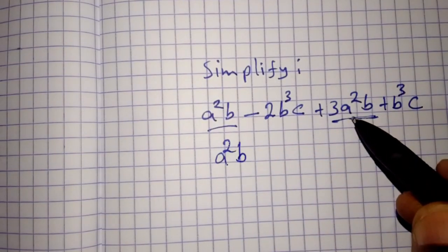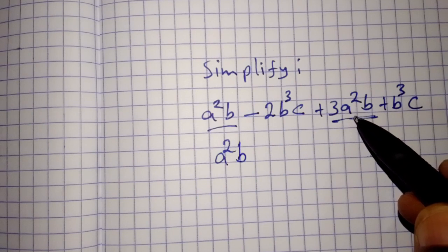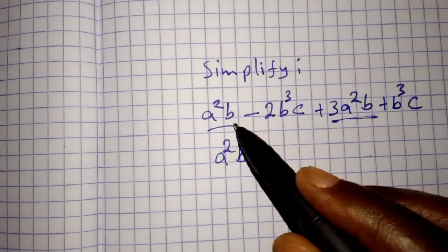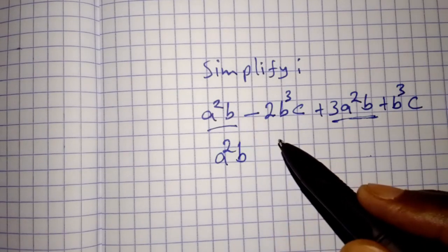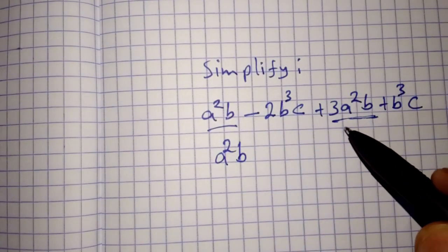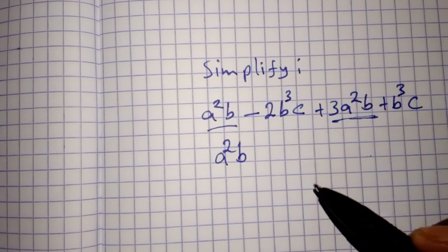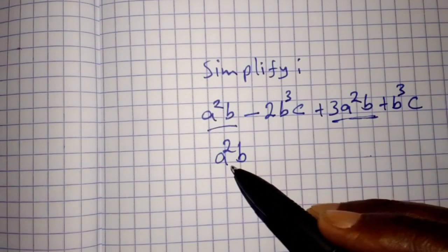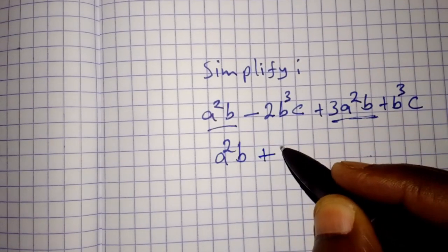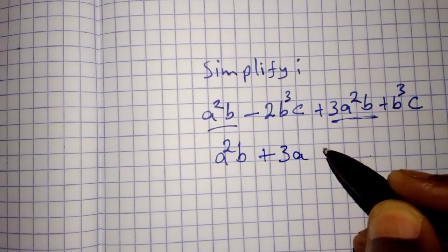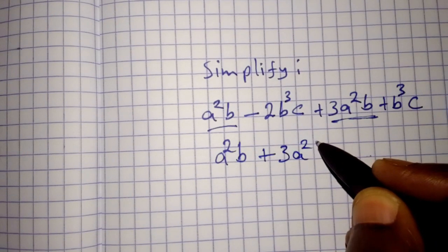We bring the like terms together. The like terms a²b and 3a²b, we bring them together. So it is a²b plus 3a²b.